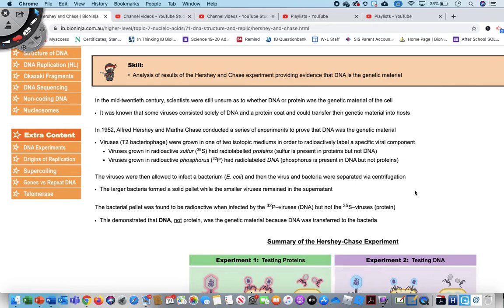So if you recall from last year and even ninth grade, when the transforming agent in Frederick Griffith's experiment was determined, scientists didn't know if that transforming agent that was being passed on from one cell to another was DNA or proteins.